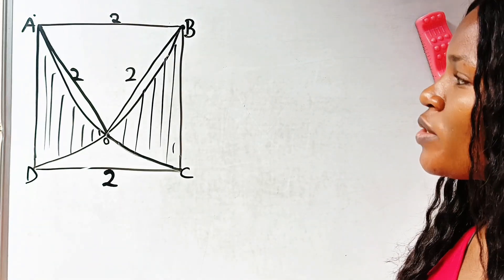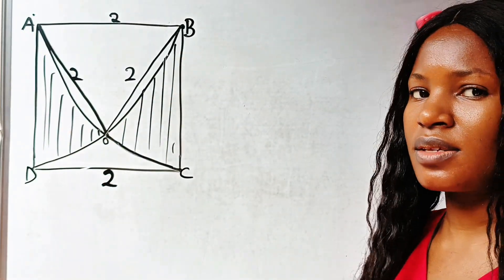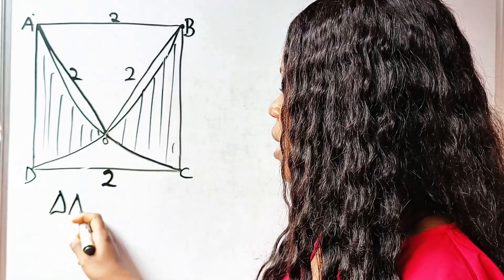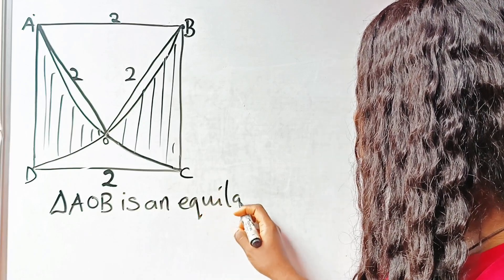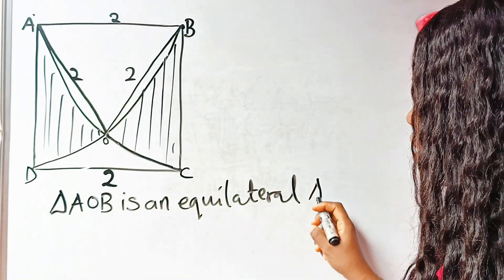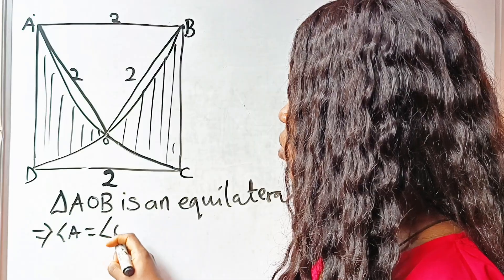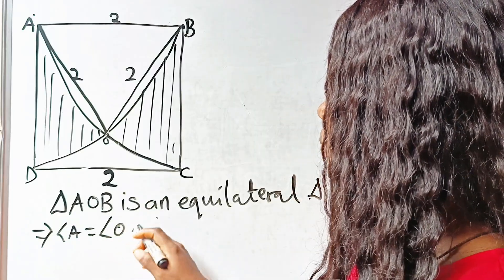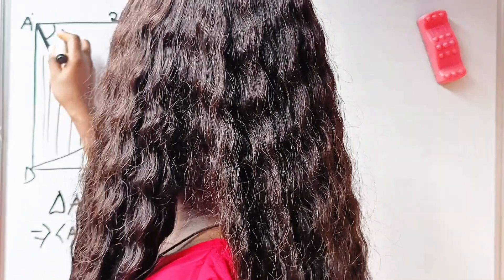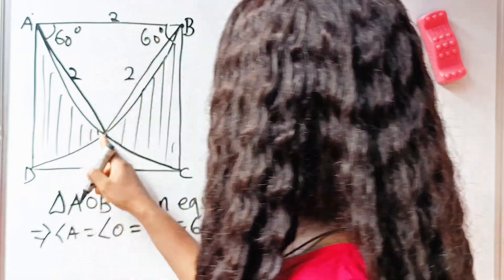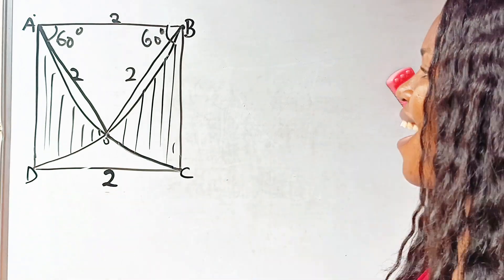So now we have two things here: we have a sector AOB, but before that — triangle AOB is an equilateral triangle. This implies that angle A equals angle O equals angle B, which equals 60 degrees. So we have 60 degrees here, 60 degrees here, and 60 degrees there.